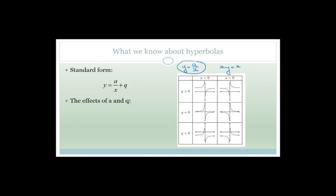Similarly, if q is smaller than zero, then you can see the graph has been shifted down. If a is smaller than zero, then you're always in the second and fourth quadrants — those are the negative quadrants. If a is greater than zero, it means it's positive, and then you're in the first and third quadrants.